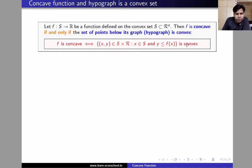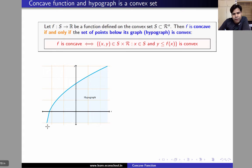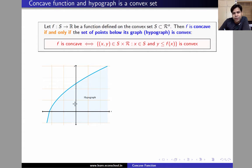Let us see that in pictures. For simplicity, let us consider the graph of a function f which is defined on a real line. As we can see, this function is concave, and we can also see that the set lying below the graph appears to be a convex set. We'll prove formally that these two properties are equivalent.